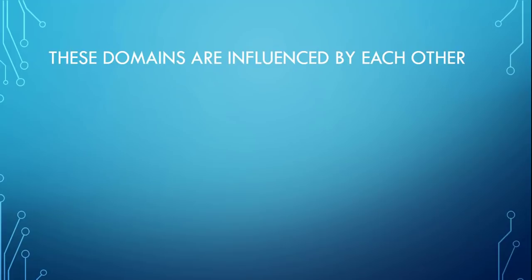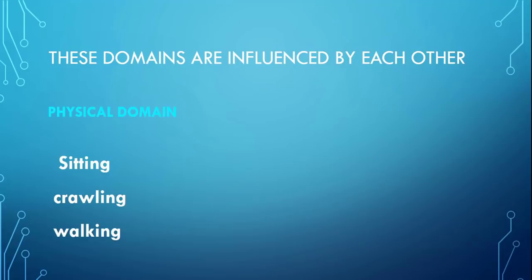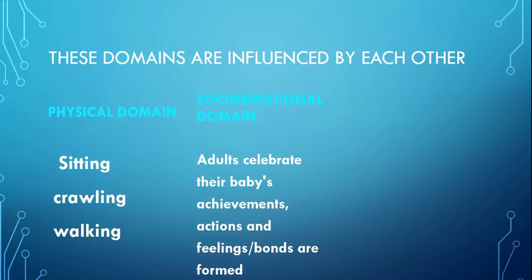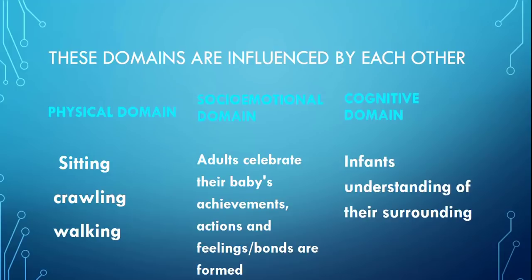These domains are influenced by each other. Physical domain میں جو بچے یا چھوٹے kids ہیں، ان کی sitting، crawling اور walking ان کی characteristics ہیں۔ اسی طرح socio-emotional domain میں جب adults اپنے بچوں کی birthday یا achievements celebrate کرتے ہیں تو ان کے actions، feelings اور bonding بچے کی socio-emotional domain کو influence کرتے ہیں۔ Cognitive domain میں جب چھوٹے بچے اپنے اردگرد کے ماحول کو سمجھتے ہیں تو ان کی cognitive development ہو رہی ہوتی ہے — جیسا کہ پہلے ذکر کیا، language کی جب growth ہو رہی ہوتی ہے تو باقی skills بھی improve ہو رہی ہوتی ہیں، بچہ پہلے دو سالوں میں language سیکھ رہا ہوتا ہے۔